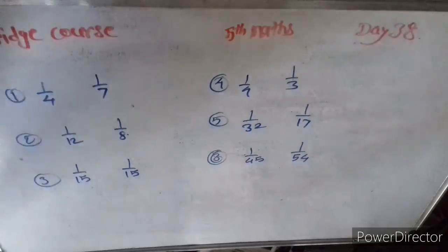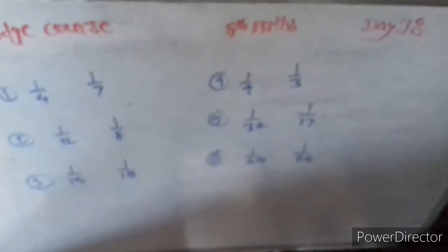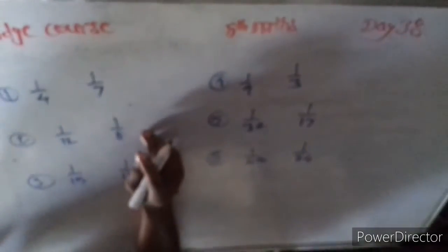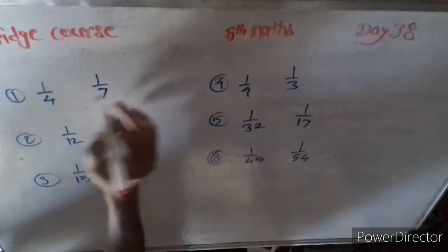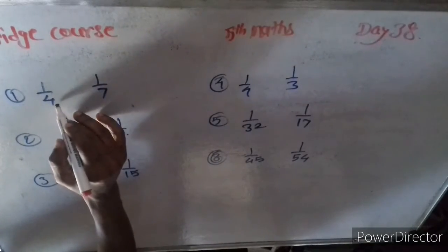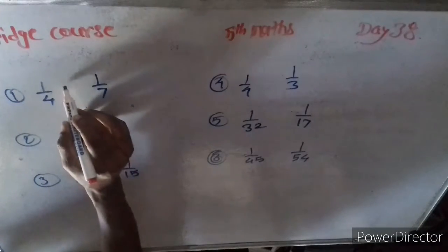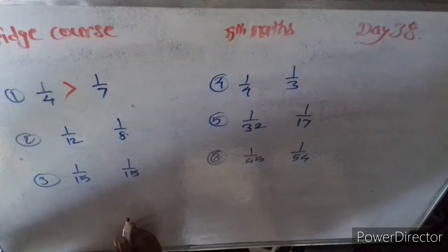Now, one by four, one by seven. We use the simple trick: numerator same, the denominator is small, then it is big. So one by four biggest than one by seven.